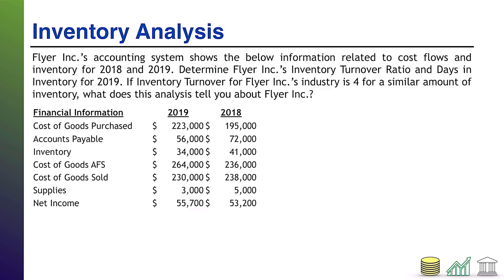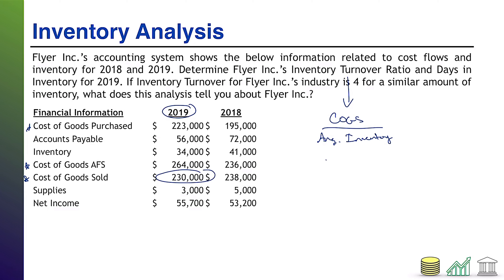Welcome back. To calculate the inventory turnover ratio, you need the formula: inventory turnover ratio equals cost of goods sold divided by average inventory. This problem tries to trick you by also giving cost of goods purchased and cost of goods available for sale — you have to know which one you need. We want 2019 cost of goods sold, which is $230,000.